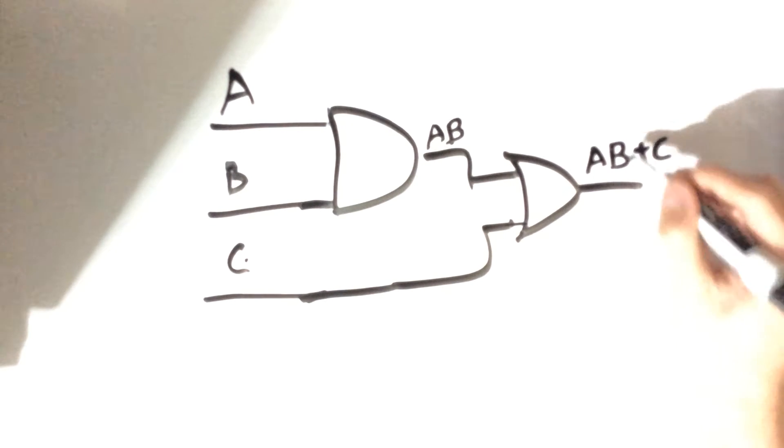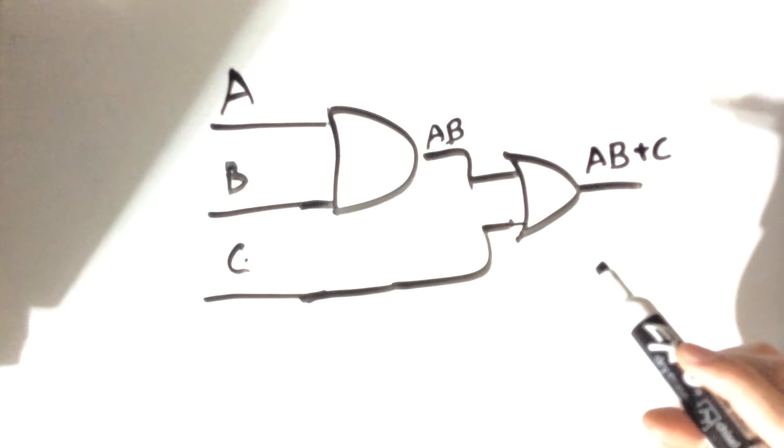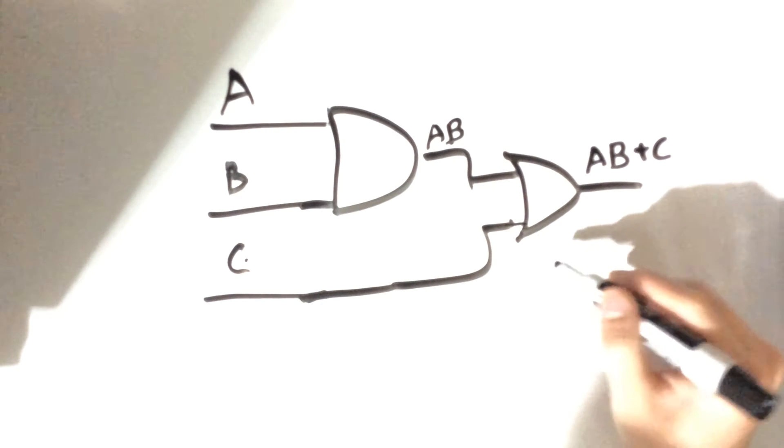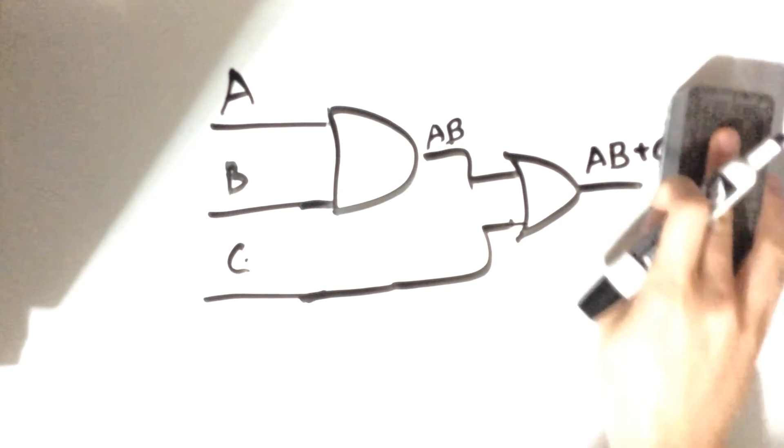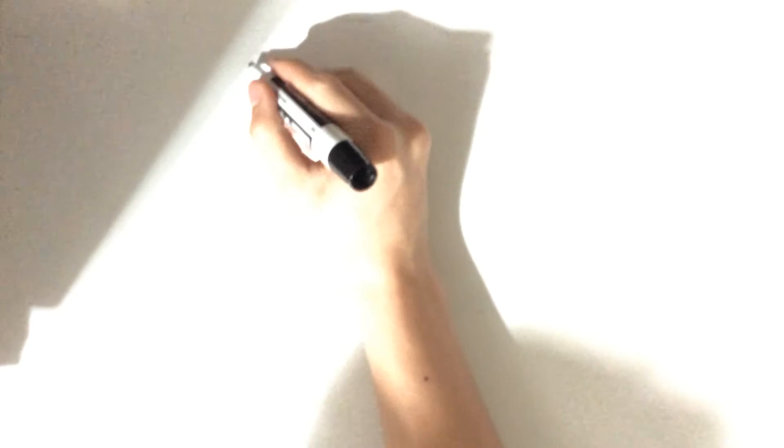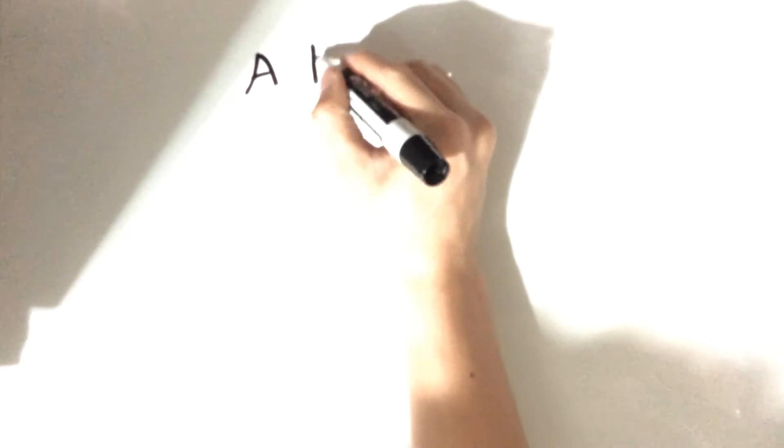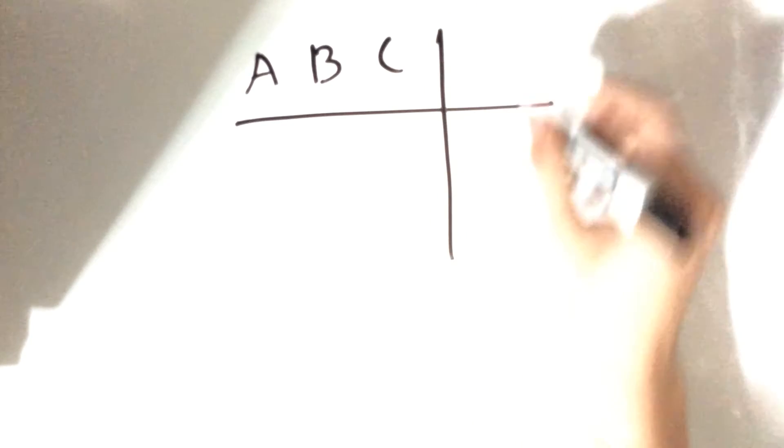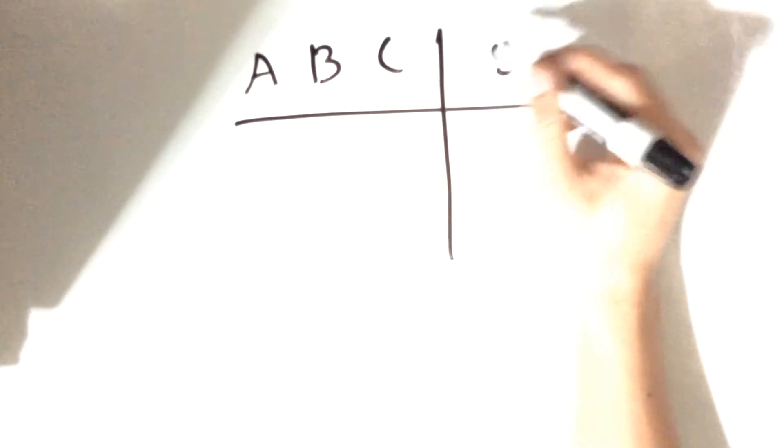Now to draw a truth table for this, I'm going to need more space here. A truth table would have A, B, C—all three inputs—and we'll just call Y our output here.